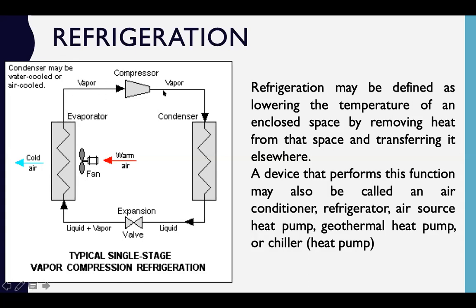The vapor is compressed in a cycle — vapor goes to the compressor, then through the condenser, then back, and cold air comes out of the fan. This system is what you see in air conditioners. Refrigeration may be defined as lowering the temperature of an enclosed space by removing heat from that space and transferring it elsewhere. A device that performs this function may be called an air conditioner, refrigerator, air source heat pump, geothermal heat pump, or chiller.